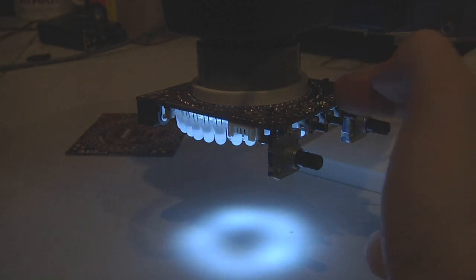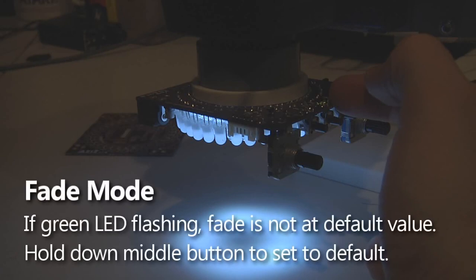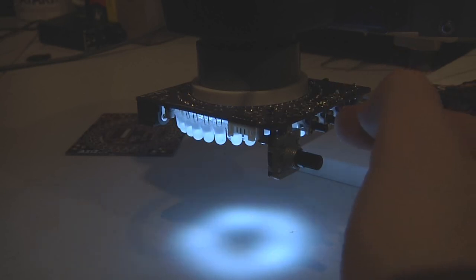Now you'll see that once I've made these changes, the green LED starts to flash in the center. This is just telling you that you're no longer at the default values. But if you want to get back there, you can simply hold down that middle button, and it will return it to whatever the program values were for that pattern.